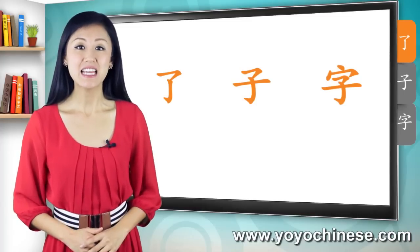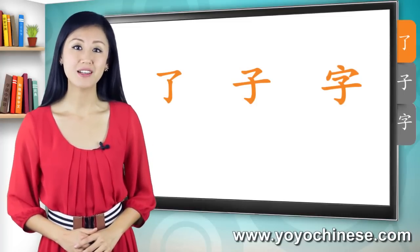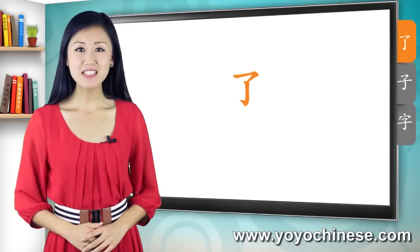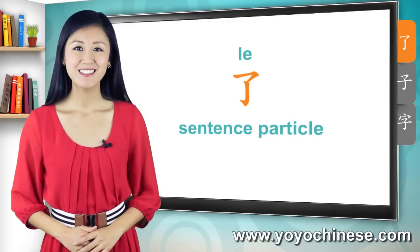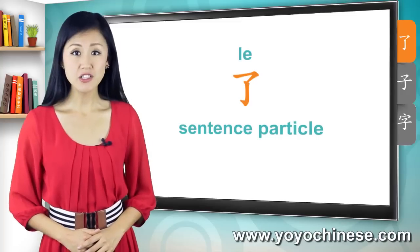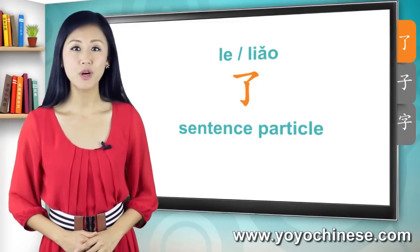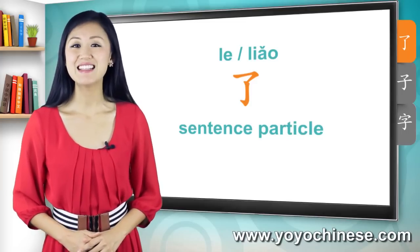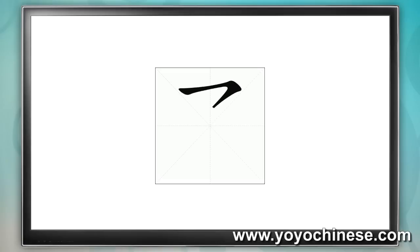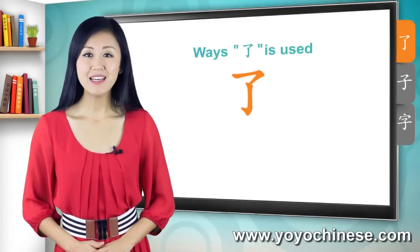All of the characters in this lesson contain the same basic building block. Here's our first one. This is the character for the sentence particle 了. In some cases, this character is also pronounced 了. You can find more details about this in the review worksheet. But for now, just think of this as 了. It's a very simple character. There's a hook on top and hanging from it is a straight leg with a foot at the bottom. This is how it's written stroke by stroke.